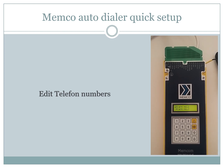Now we can set in the same way three more phone numbers that will be dialed in case the first one cannot be connected, by accessing alarm number two, alarm number three, and alarm number four.